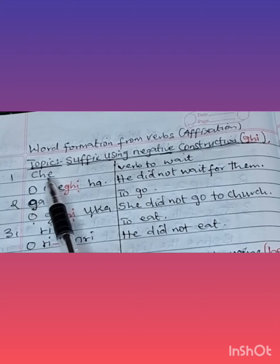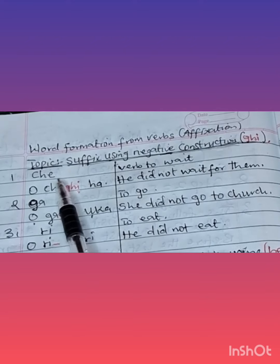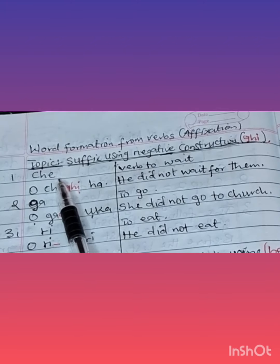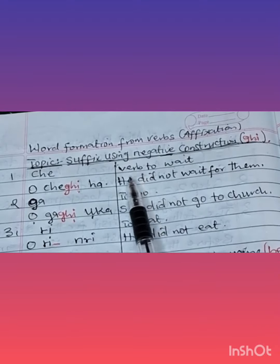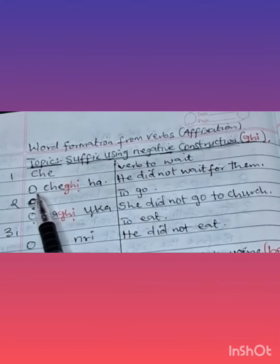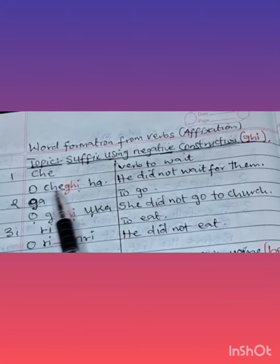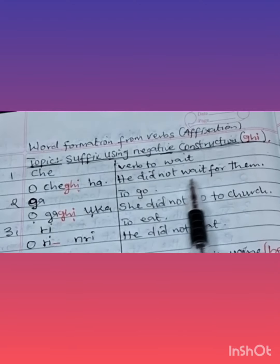For example, number one, che. Che is a verb in Igbo. In English, you have it as to wait. Oche inha, he did not wait for them.